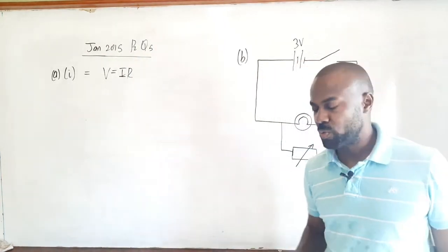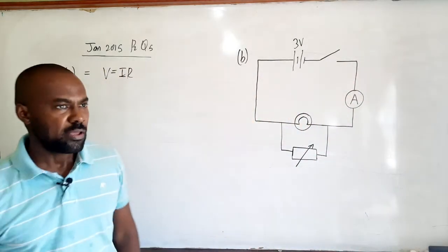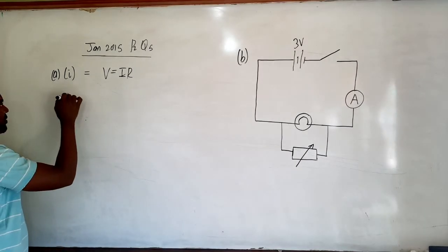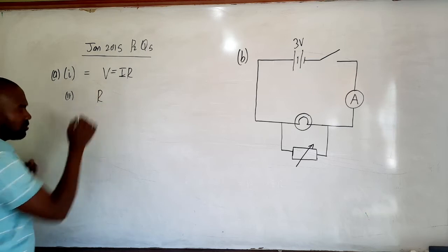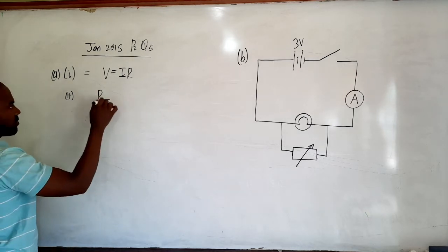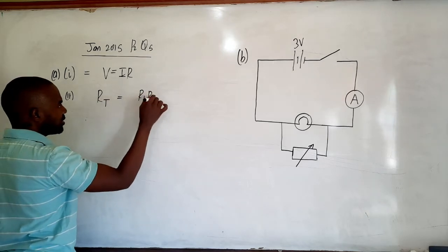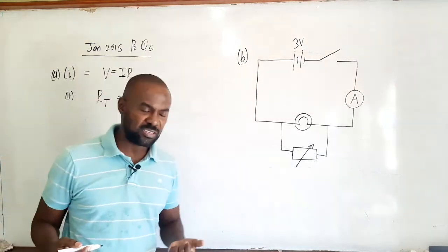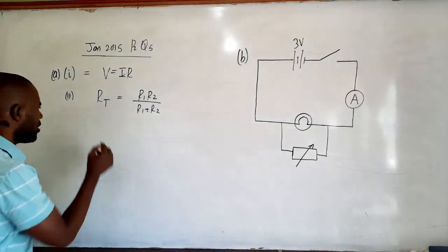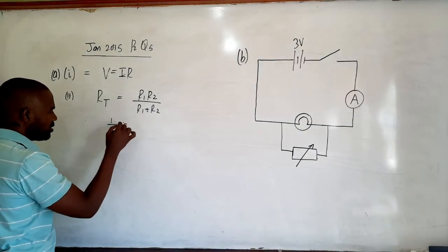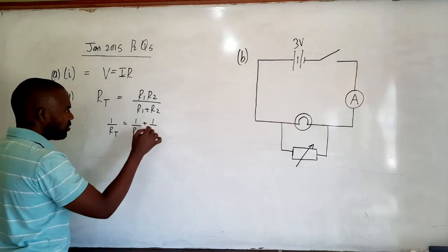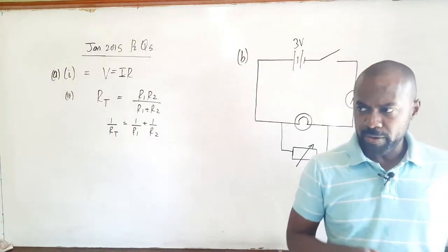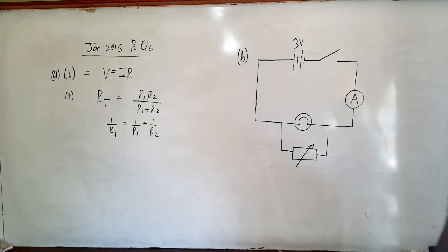Part A2 says: state the formula that expresses the total resistance RT of two resistors R1 and R2 in parallel. If we have two resistors R1 and R2 in parallel, then RT equals R1 times R2 over R1 plus R2. Of course, if you wrote 1 over RT equals 1 over R1 plus 1 over R2, you should have gotten the mark as well, since it was one mark for that part.